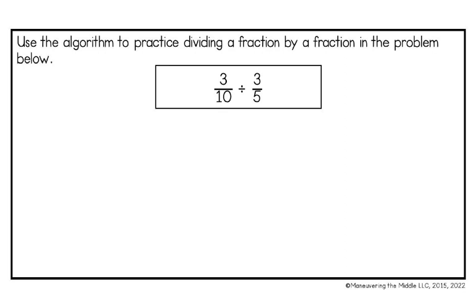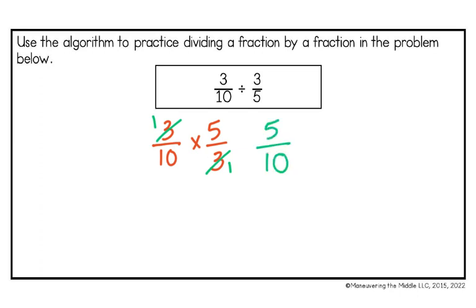I have 3 tenths divided by 3 fifths. I keep my first fraction, change my symbol, and flip my second fraction. Here's a quick tip: when we have two numbers that are identical in the numerator and denominator, they cancel out. So I can get rid of both 3s, which become 1. Anything times 1 is itself, so my new fraction is simply 5 tenths. Dividing top and bottom by 5, my final answer is 1 half.